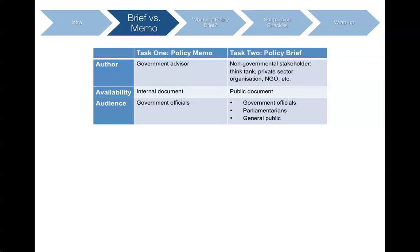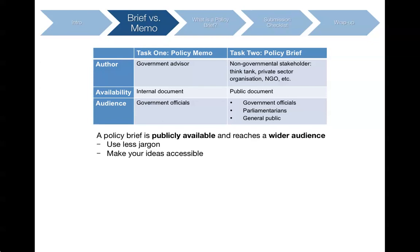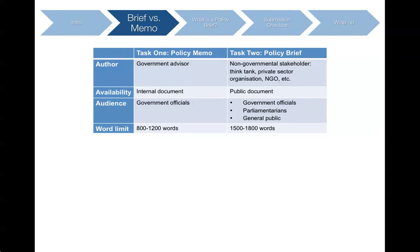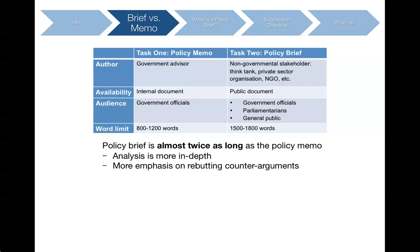The availability and audience for Task 2 are also different. Unlike the Task 1 policy memo, which was written for government officials, the policy brief is now publicly available — anybody can read it. So your language needs to be less specialized. Even your best friend and family should be able to understand everything you are saying. The word limit is different too. For Task 1, the policy memo required up to 1,200 words. For Task 2, the policy brief is almost twice as long — between 1,500 and 1,800 words. This gives you an opportunity to expand your analysis by going more in-depth, and you should spend some time acknowledging limitations to your arguments and rebutting counter-arguments.